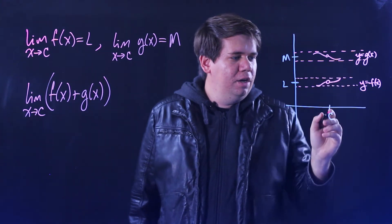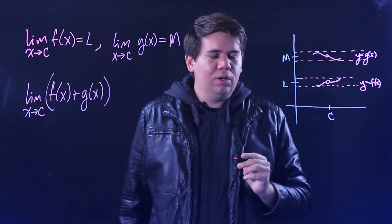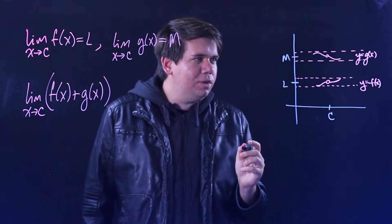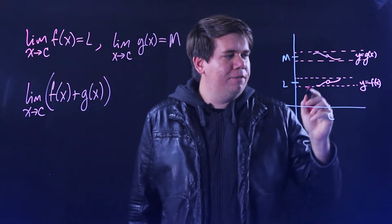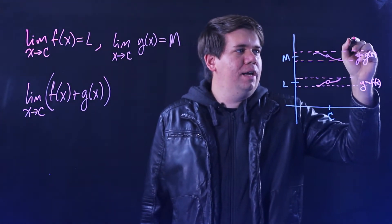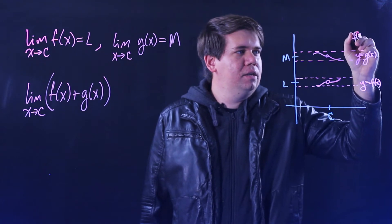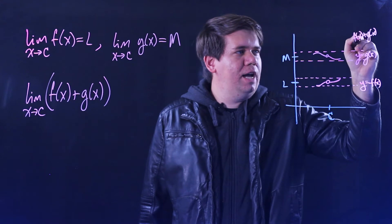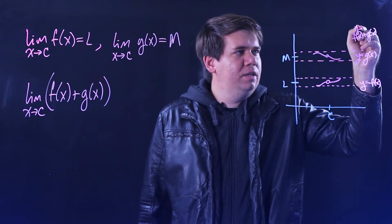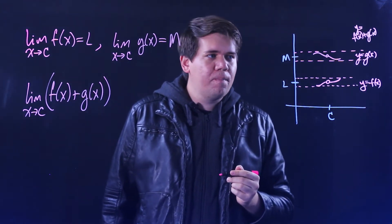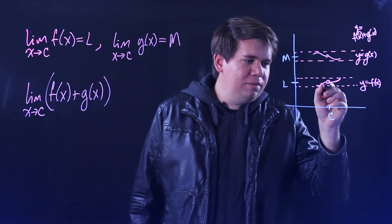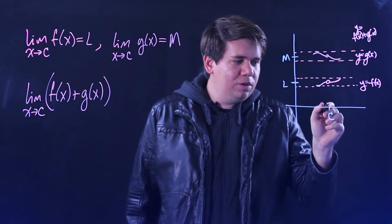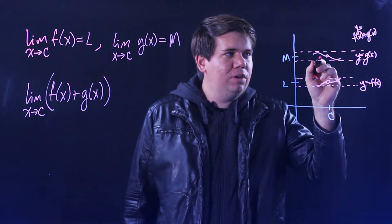So whatever G of X looks like, whatever y equals G of X looks like, we know it's going to be arbitrarily close to M for X values that are very close to C. Then what's going to happen when you add F with G — when you have F of X plus G of X? Well, if all these values very close to C are something very close to L, and other values very close to C are very close to M...